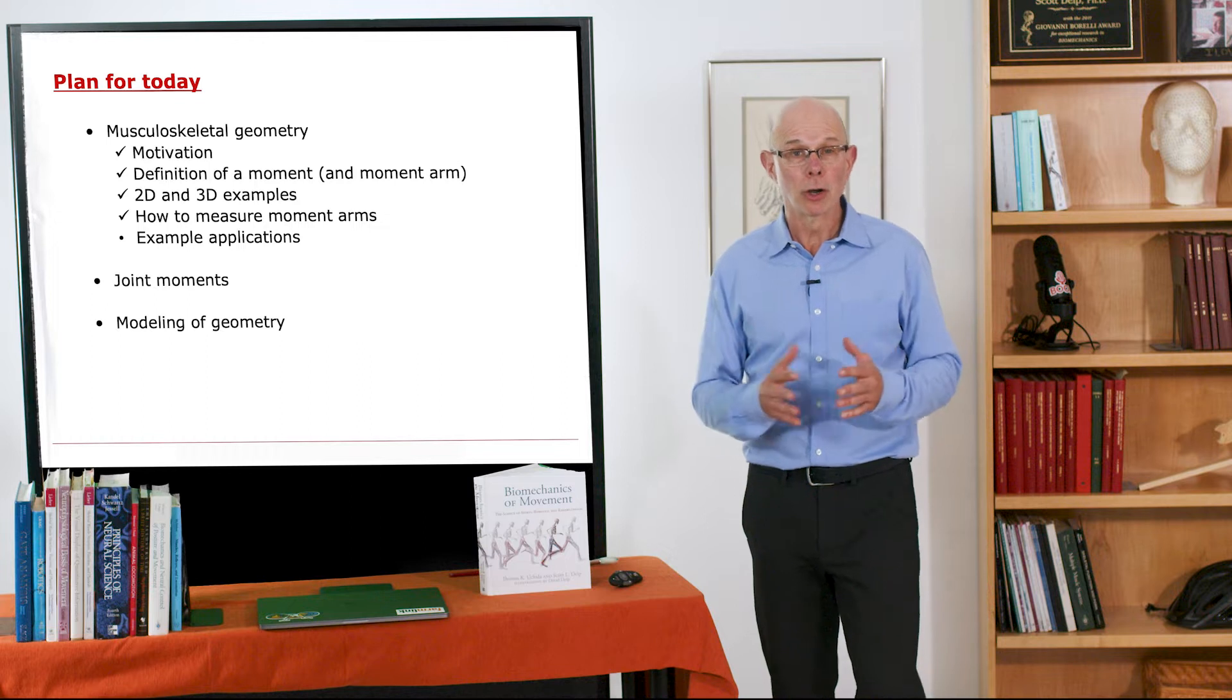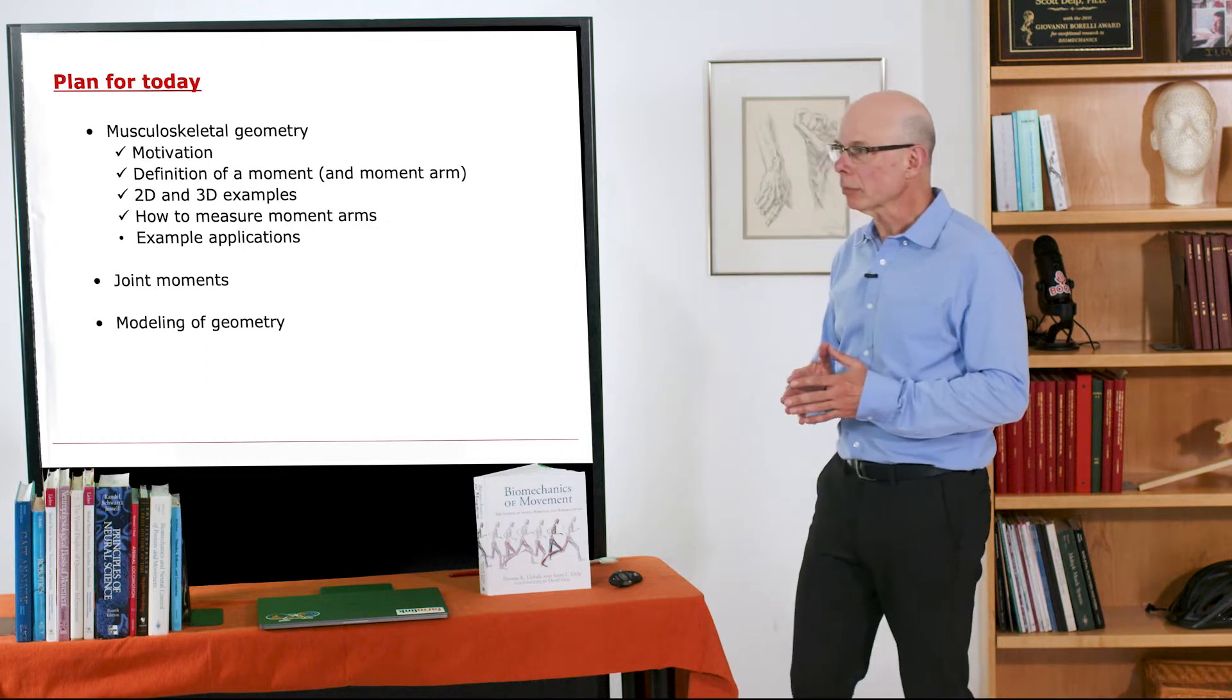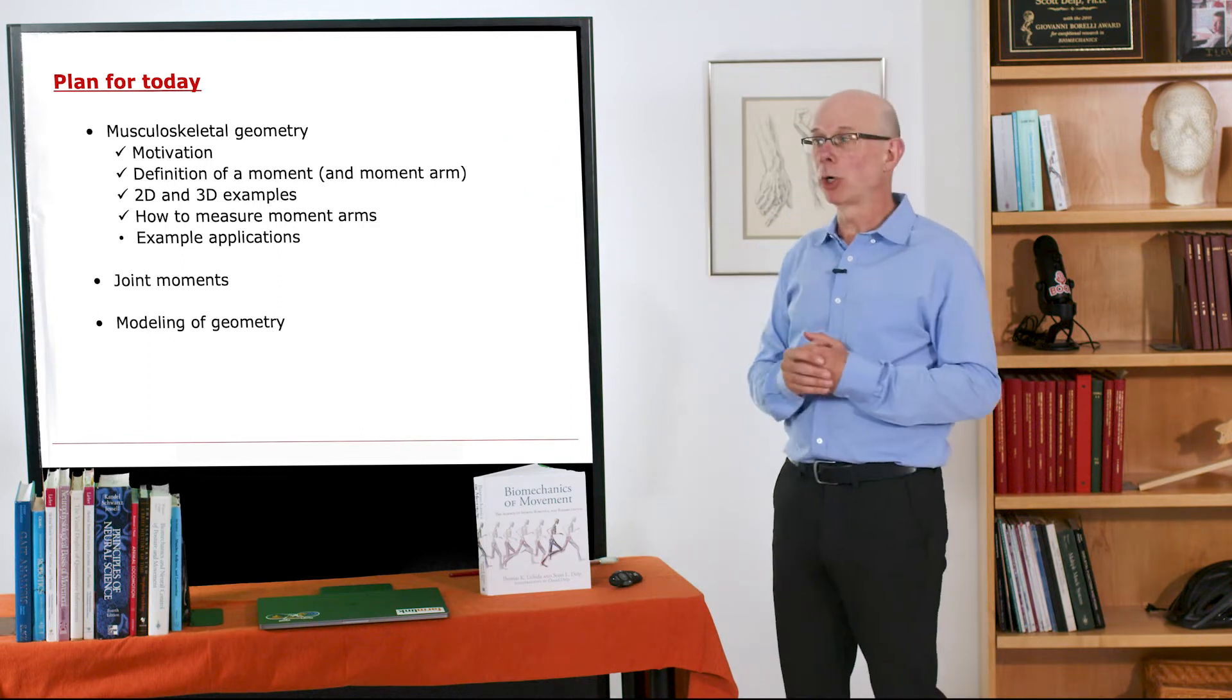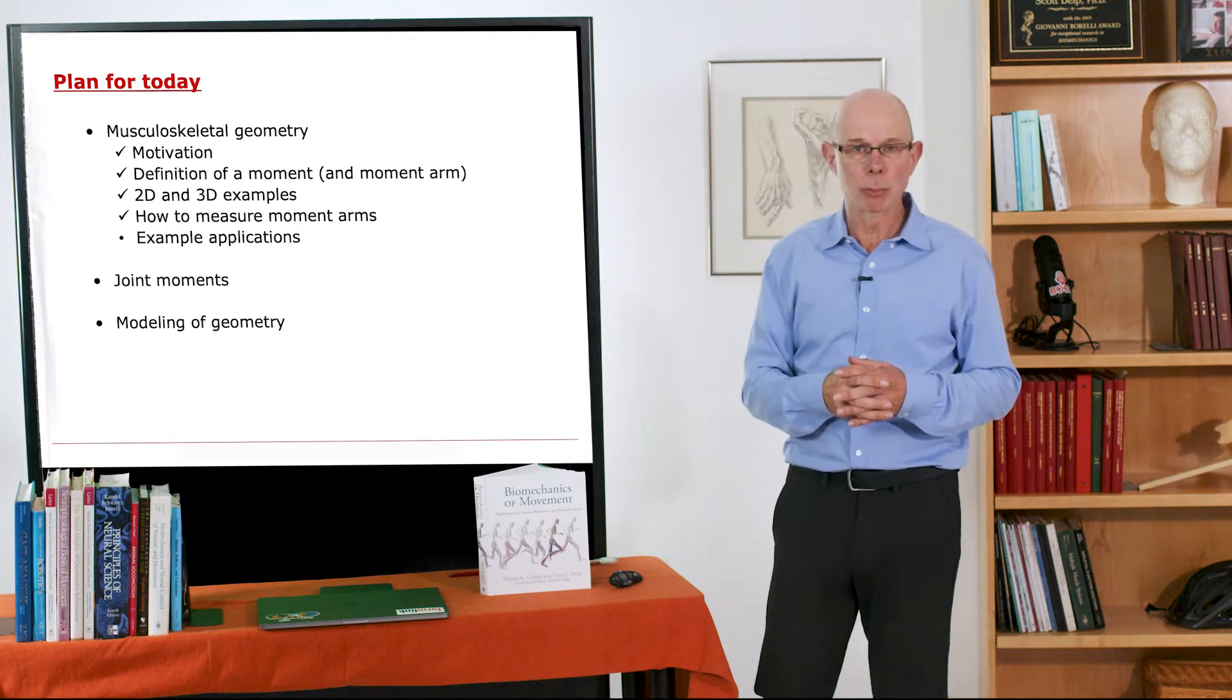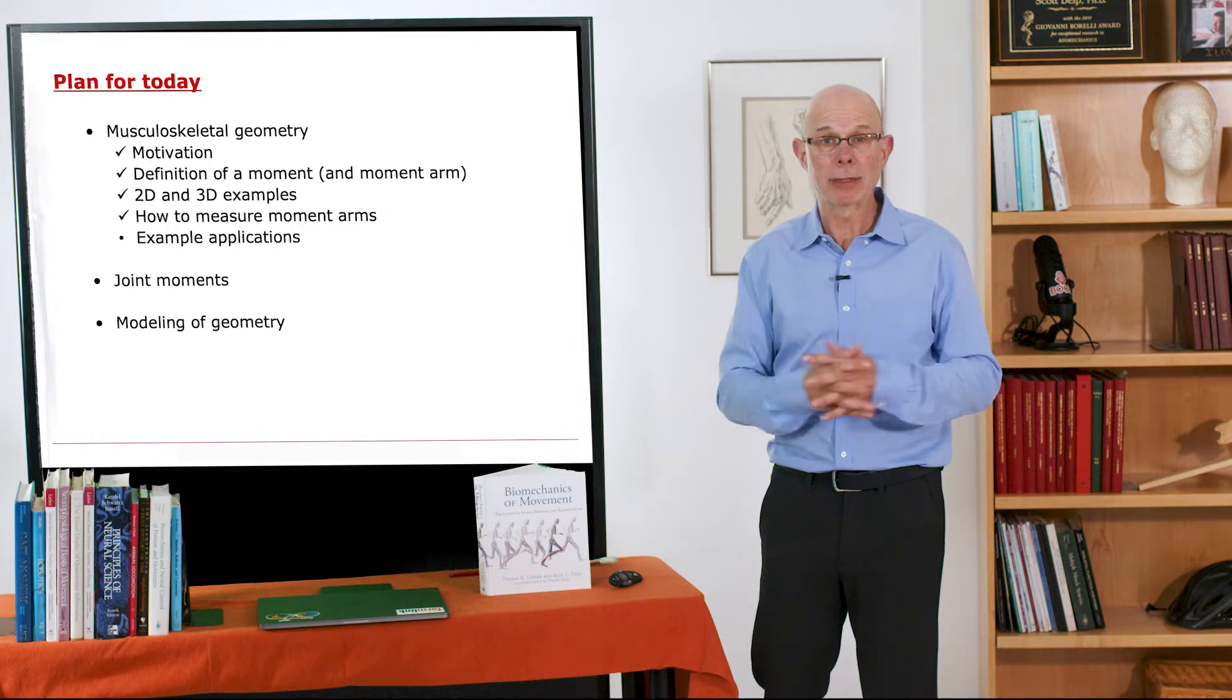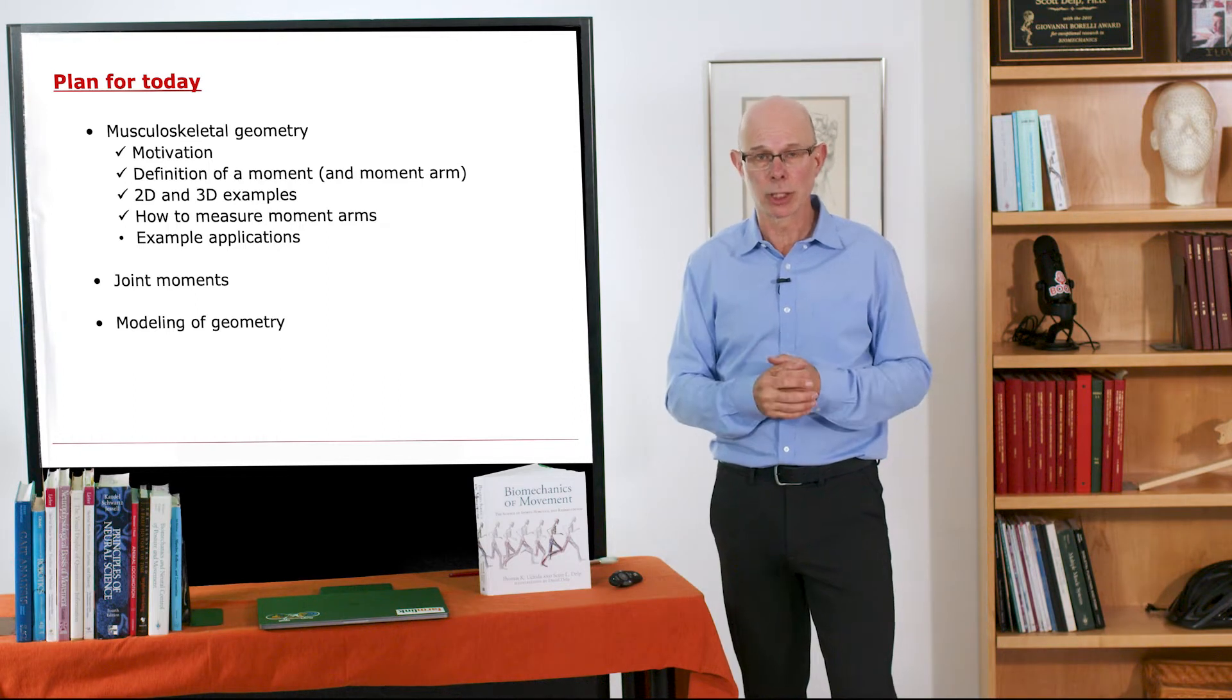So we've made a good start on understanding musculoskeletal geometry. We talked about the motivation, the definition of a moment and moment arm, done 2D and 3D examples and talked about how to measure moment arms from MRI or tendon excursion or other methods. Now I'd like to show you some specific examples where these come into play.